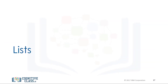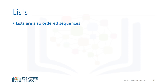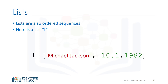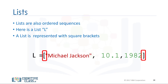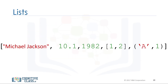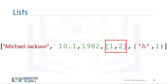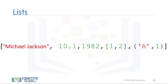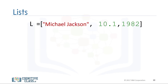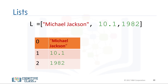Lists are also a popular data structure in Python and are also an ordered sequence. Here is a list L, represented with square brackets. In many respects, lists are like tuples — one key difference is they are mutable. Lists can contain strings, floats, and integers. We can also nest other lists, tuples, and other data structures. Like tuples, each element of a list can be accessed via an index.